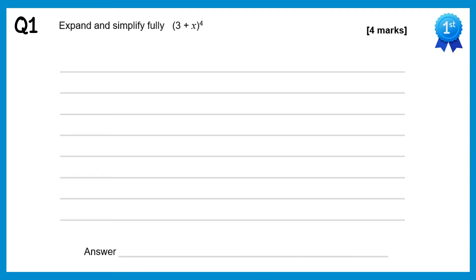For this first question we have a bracket raised to the power 4, so we need the fourth row of Pascal's triangle: 1 4 6 4 1. If we compare this to (a+b)ⁿ then a is equal to 3 and b is equal to plus x.